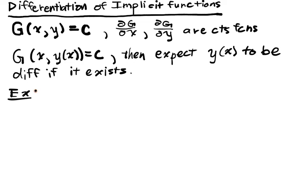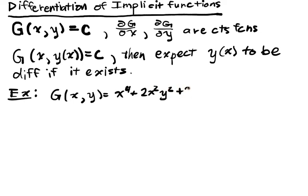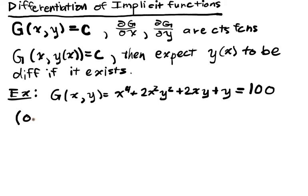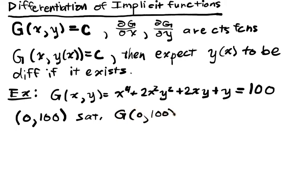Let's go to our example of a nice horrible function. So g(x, y) = x⁴ + 2x²y² + 2xy + y, and we're going to set c = 100. First you need to find a point on the graph — you need to find an x and y that satisfies this before you can even start talking about an implicit function in the region around x. If I set x = 0 and y = 100, all the x terms cancel out and y = 100, so g(0, 100) = 100.